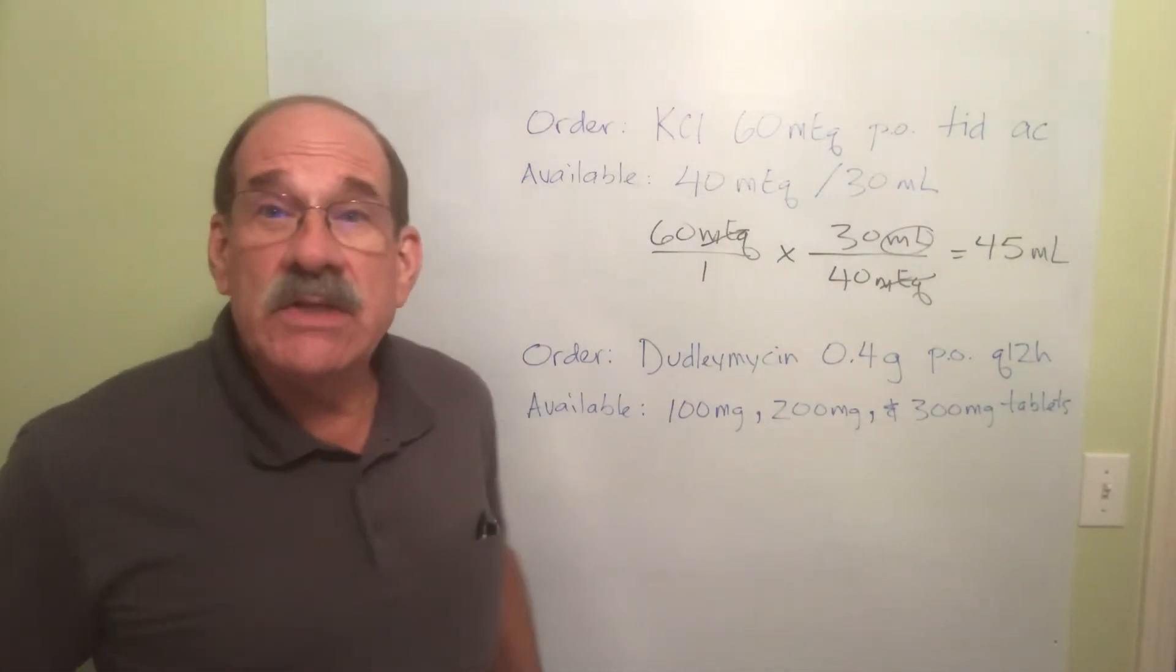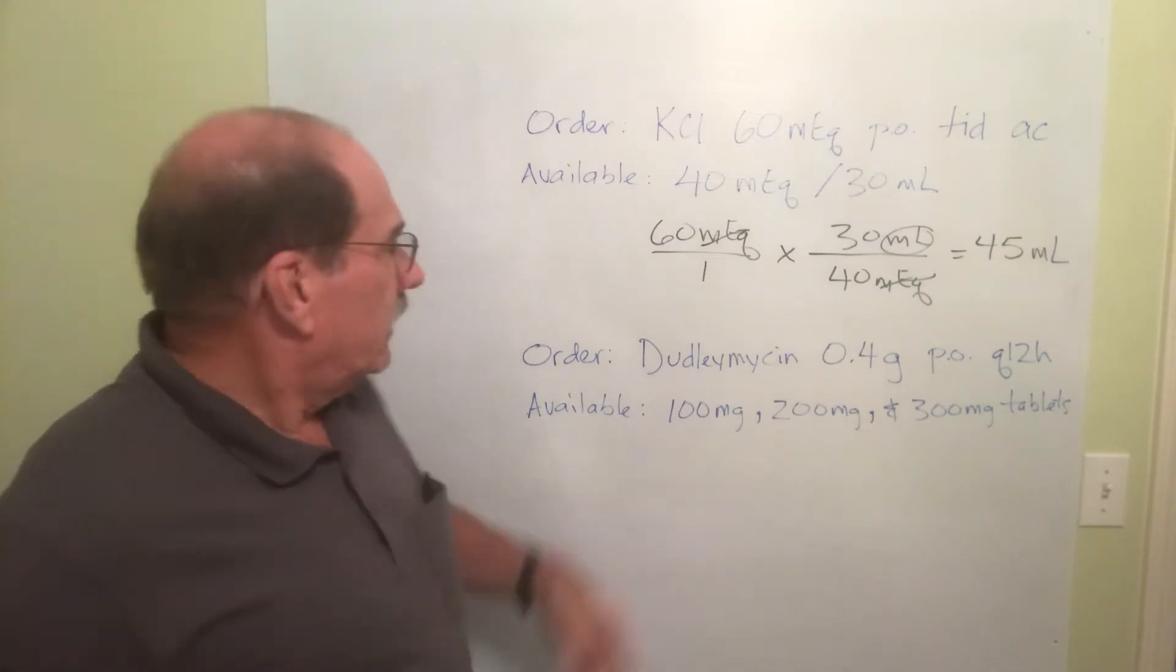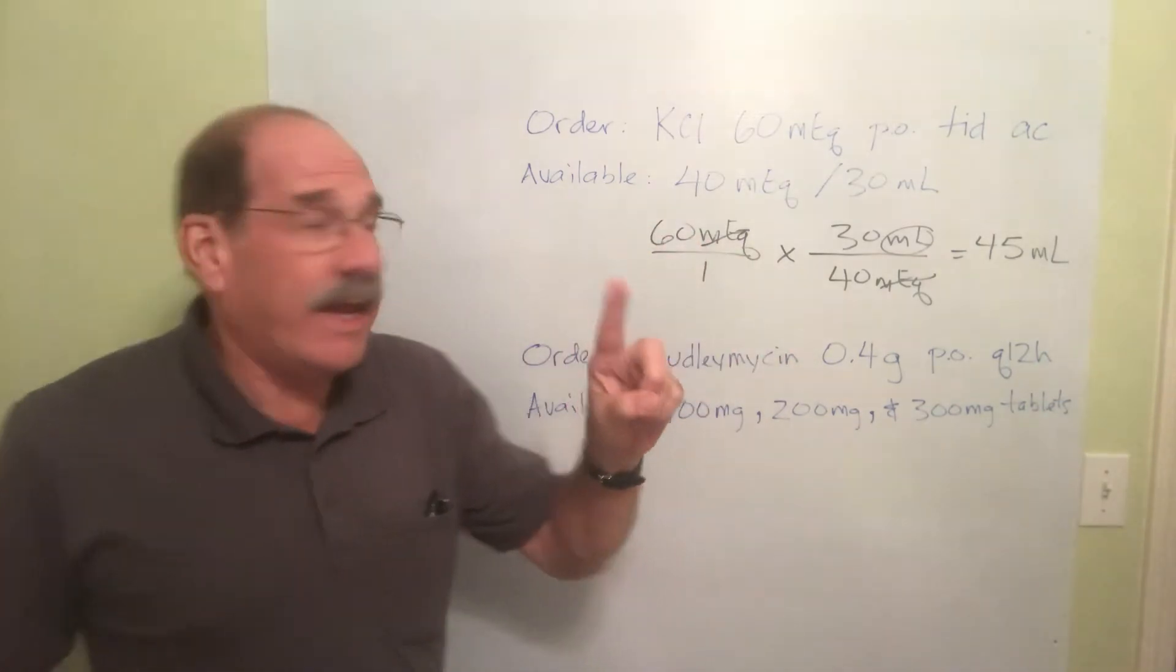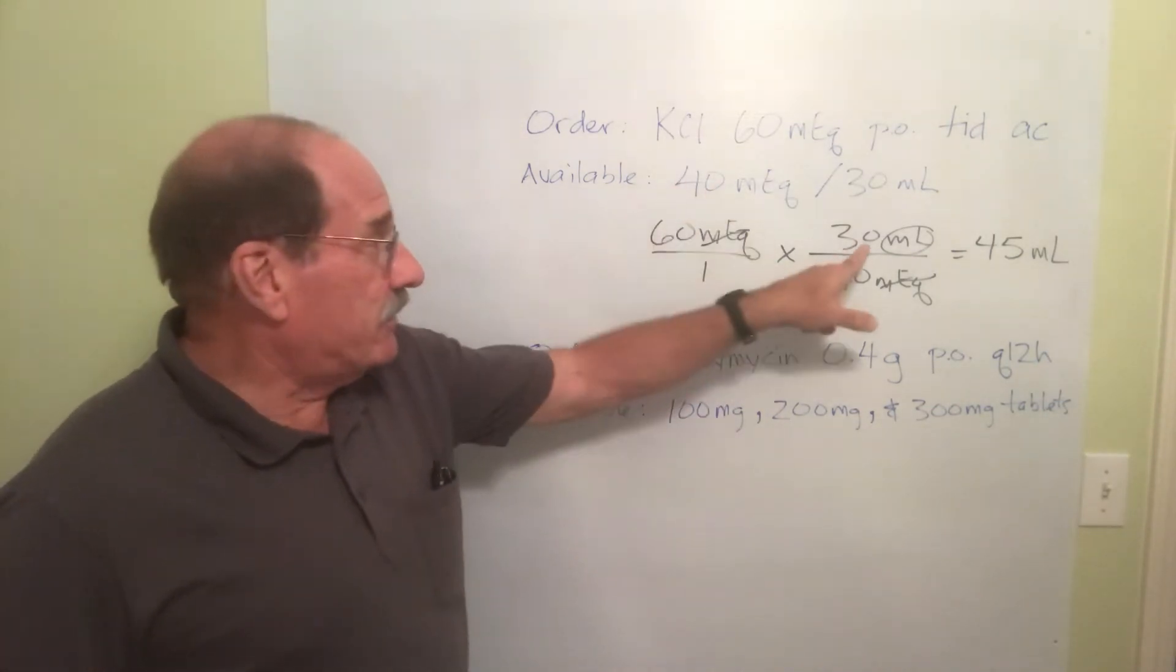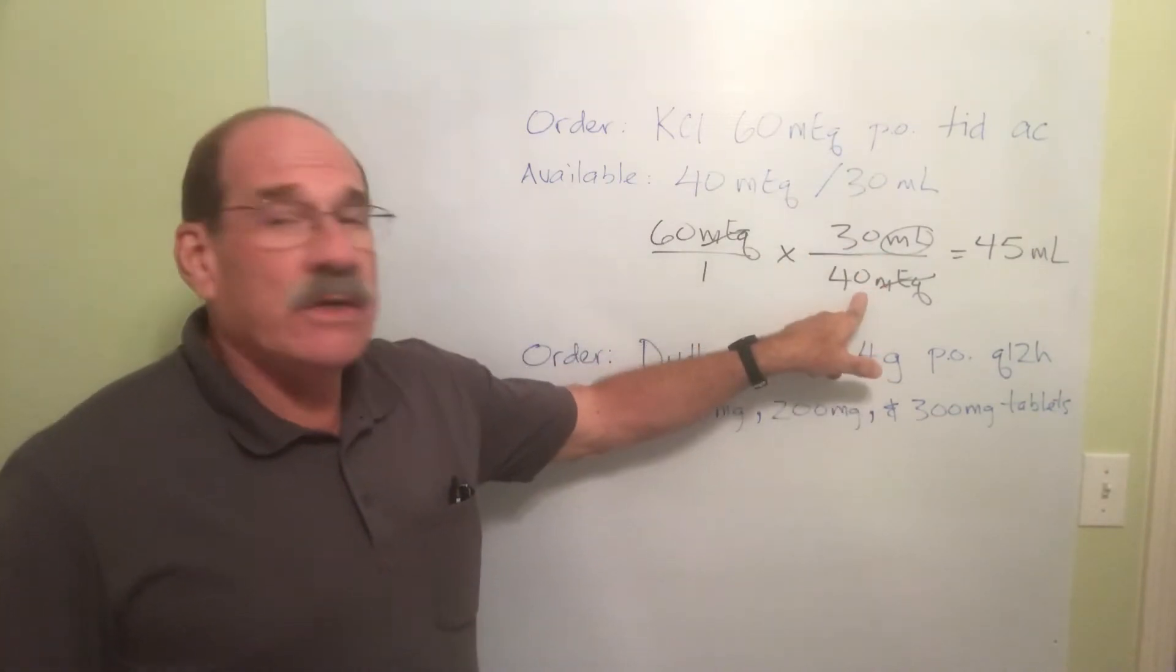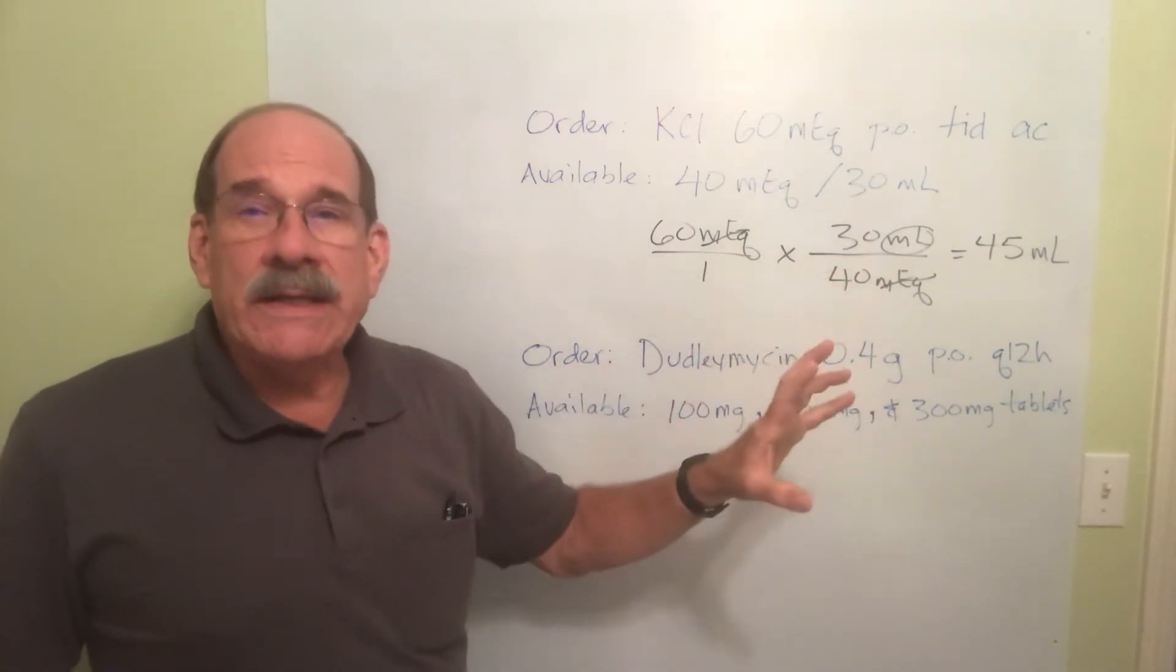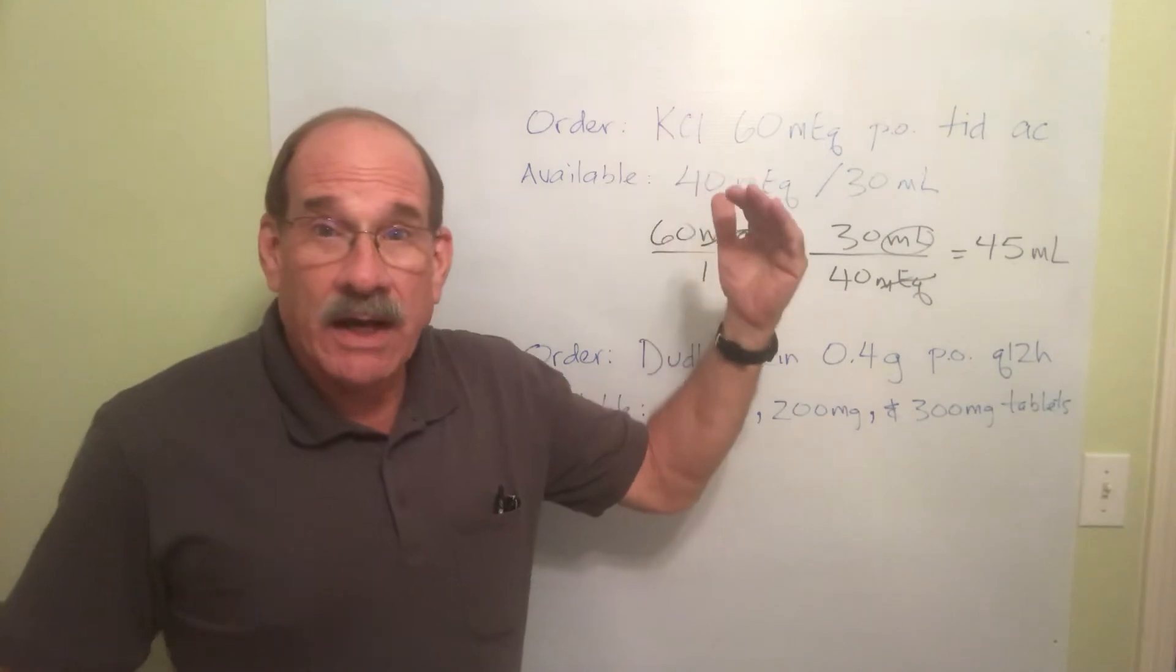Now a little more about this zero canceling thing. That's not a big deal, but realize we have a zero here, we have a zero here, we've got a zero there. The rule is for each zero on top you can cancel another zero on the bottom, just a one to one ratio.